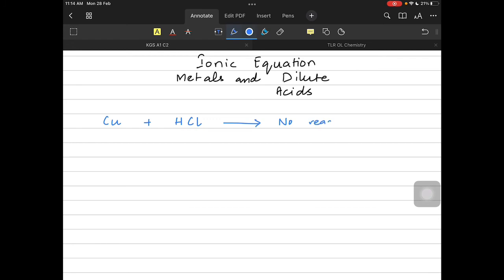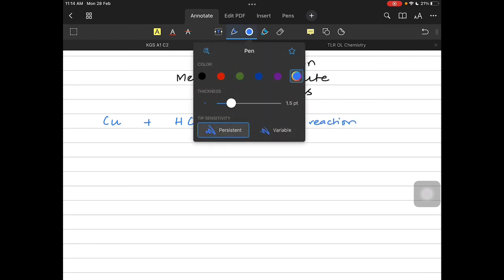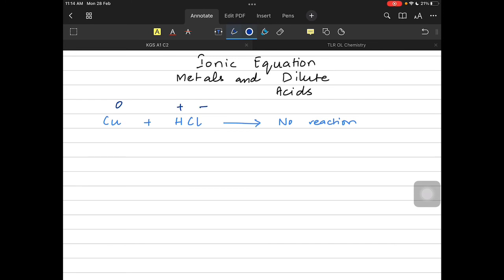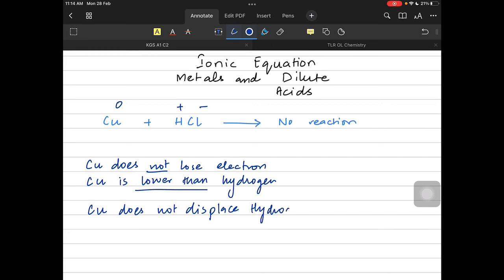When we talk about metals which are lower than hydrogen in the series, like copper, and when we make it react with dilute acids, there's no reaction over there. Because even though copper has a zero charge and hydrogen is a plus one, copper is not willing to lose its electron. So copper does not lose electrons, at least not in front of hydrogen ions, because copper is lower than hydrogen in the reactivity series. Copper is lower than hydrogen, so it does not react with H+ ions. Copper does not displace hydrogen from dilute acids because again, copper is lower in the series.